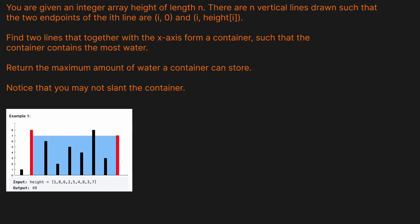All right, you are given an integer array height of length n. There are n vertical lines drawn such that the two endpoints of the i-th line are i, 0 and i, height[i]. Find two lines that together with the x-axis form a container such that the container contains the most water. Return the maximum amount of water a container can store and you may not slant the container.